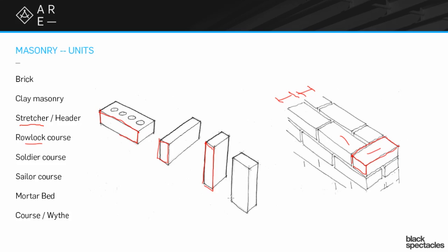It's possible you would see what's referred to as a sailor, which is like the soldier course but with the flat face exposed. That's a pretty rare move, because that flat face absorbs more moisture than the edges do for most types of brick, making it a dangerous choice that would allow a lot of water penetration. But every once in a while you will find it — it's an unusual-looking detail when you see those big flat faces vertically oriented.